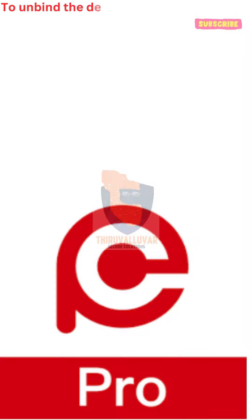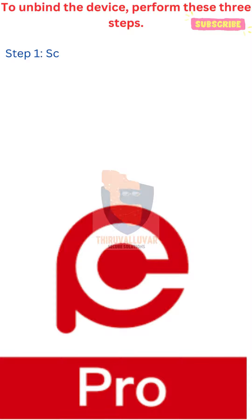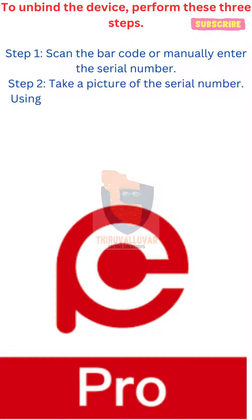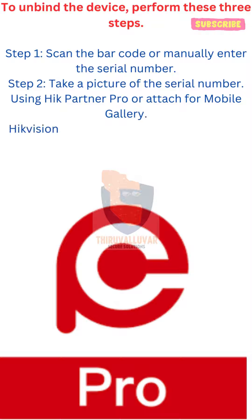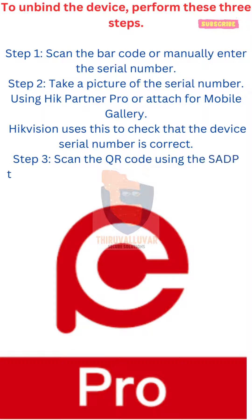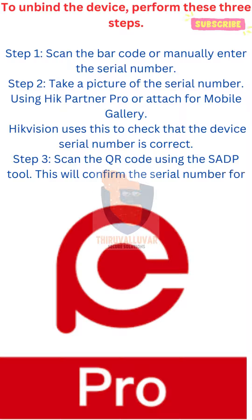To unbind the device, perform these three steps. Step 1: Scan the barcode or manually enter the serial number. Step 2: Take a picture of the serial number. Step 3: Scan the QR code using the SADP tool. HikVision uses the photo to check that the device serial number is correct, and the QR code scan will confirm the serial number for verification.